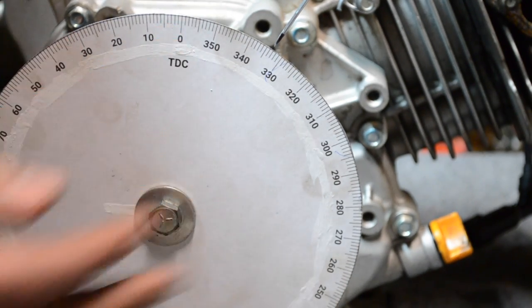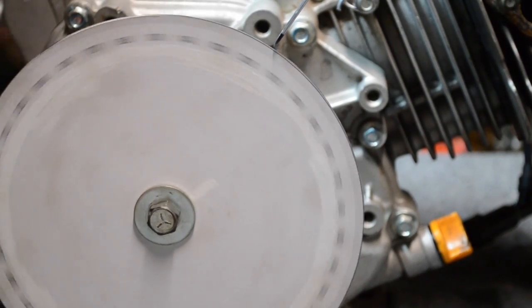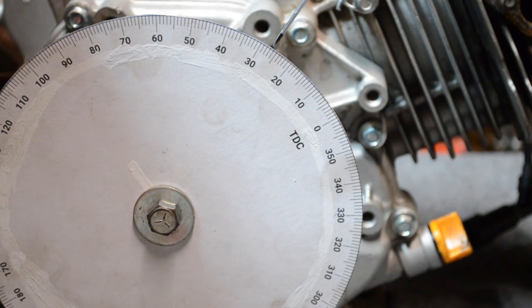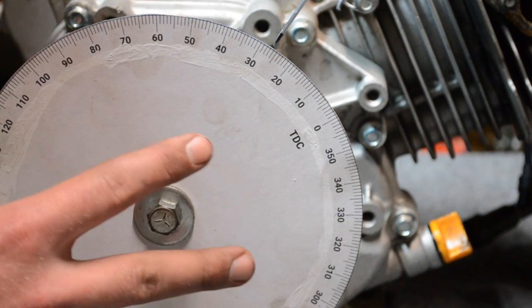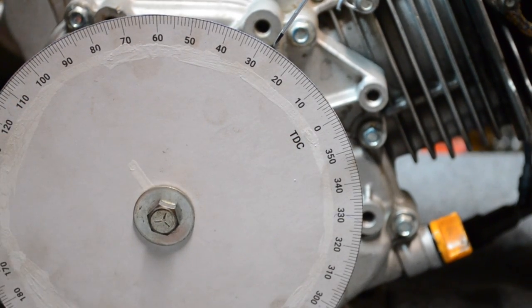To make sure, we are going to rotate the engine back one more time against the piston stop and it should read 26.5, and we are there. Since we have the equal number on both sides of zero, we know that zero is the exact top dead center.